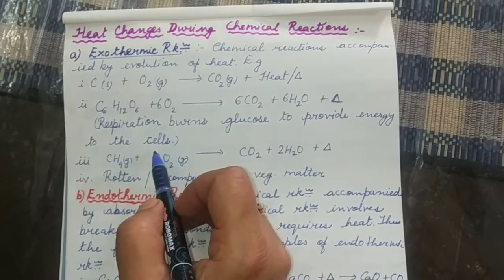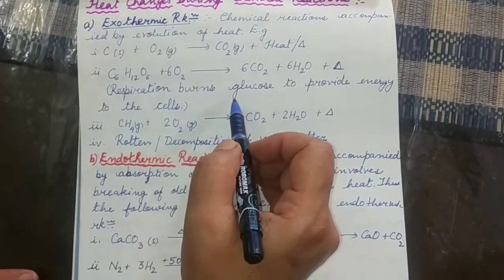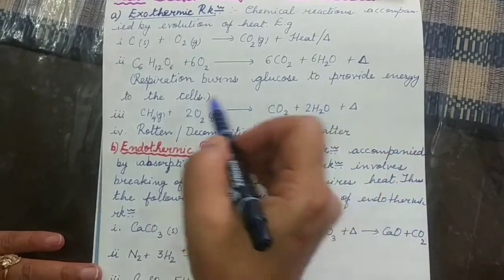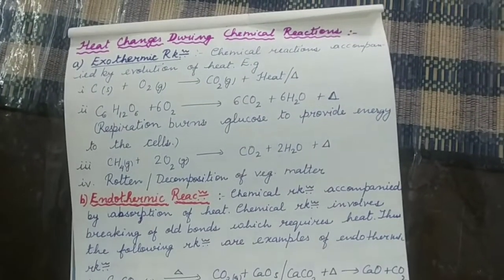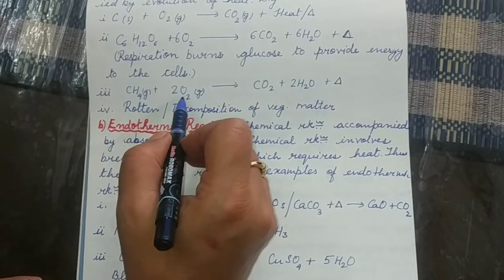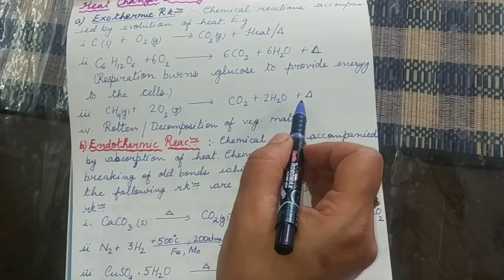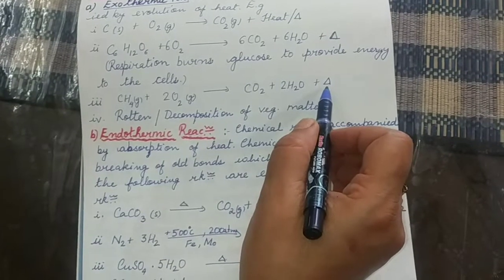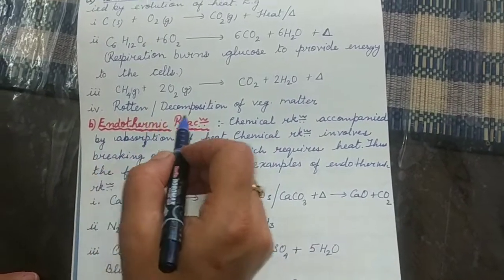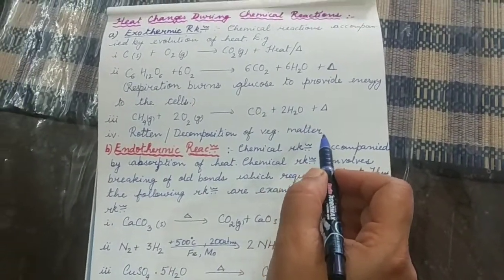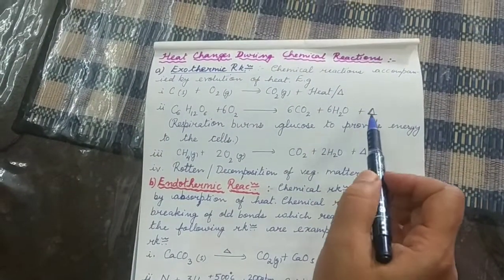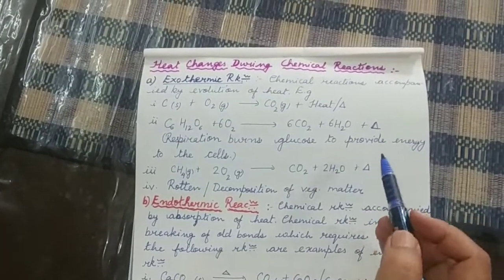During respiration, glucose is burnt or oxidized to provide energy to the cells, which is used in day-to-day activity. Similarly, burning of hydrocarbon gas like methane gives CO₂, water vapor and heat — used to cook food. Decomposition of vegetable matter by microbes is also an example of an exothermic reaction. Note that heat is a part of the product, and is written with a delta (Δ) sign on the product side.